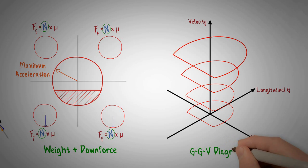This diagram is known as GGV diagram or performance envelope and gives engineers a lot of information about race car performance.